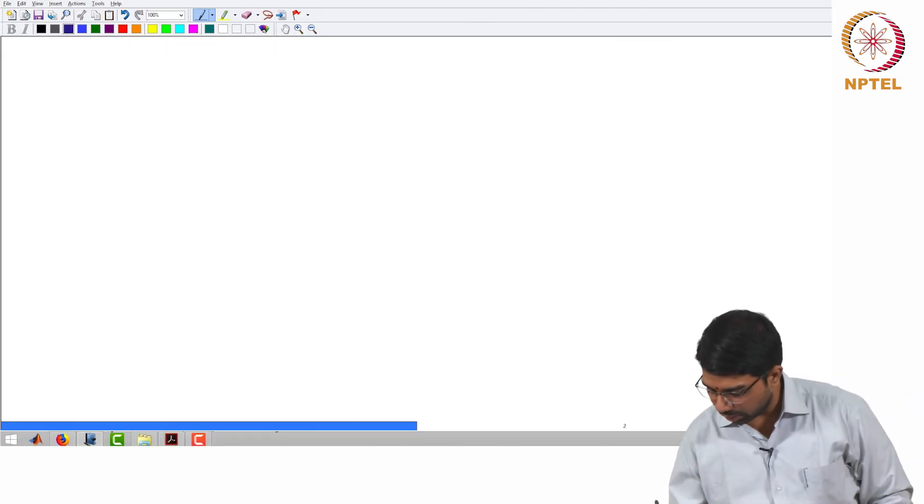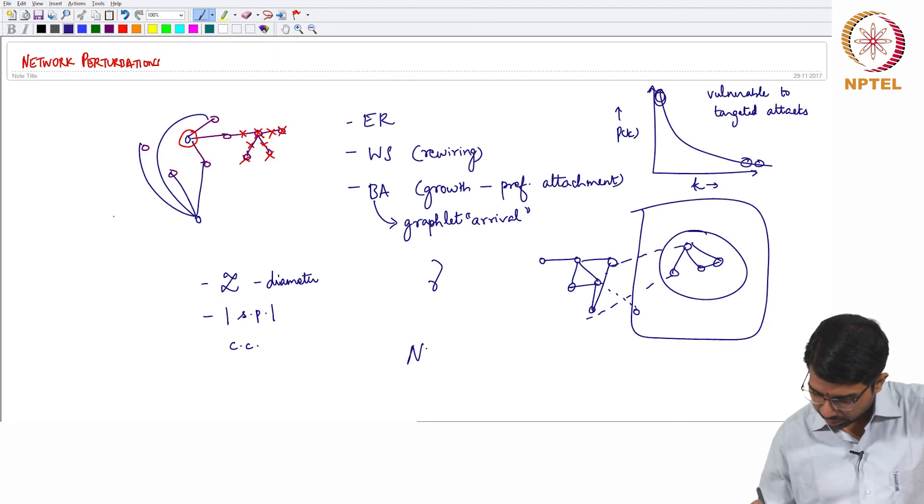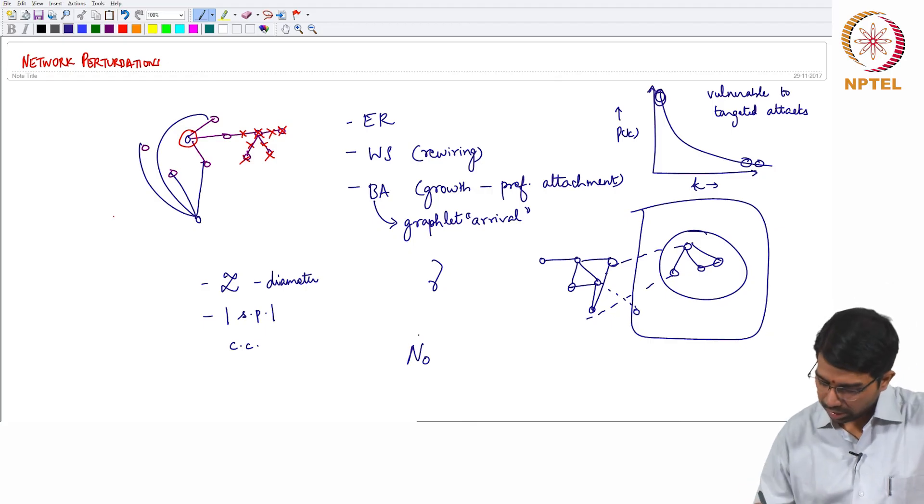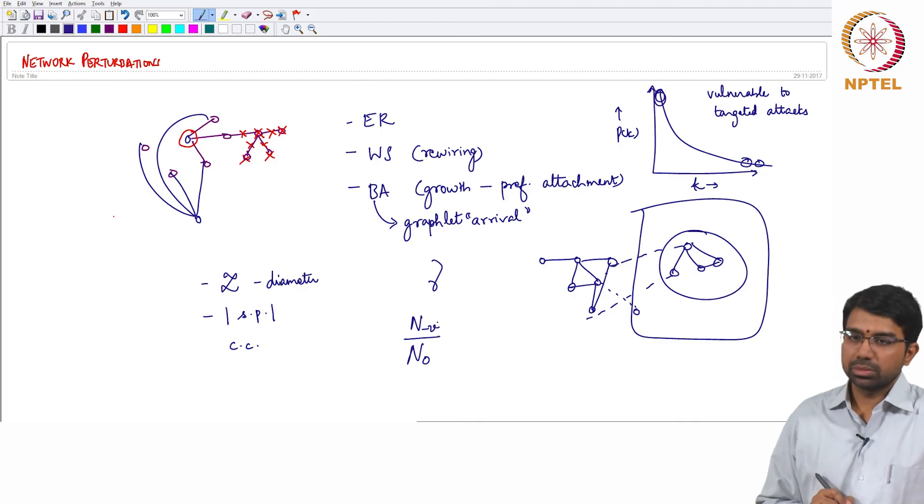This is basically nothing but, let's say this is the number of initial shortest paths in the network, N0, and you now removed the node V. Now how many shortest paths remain in the network?